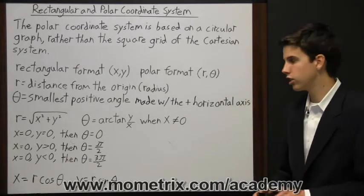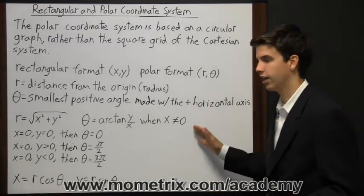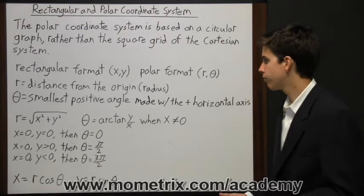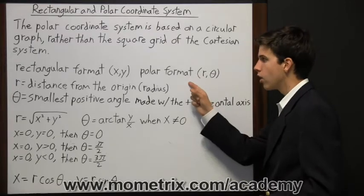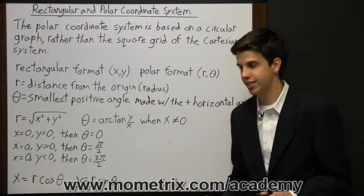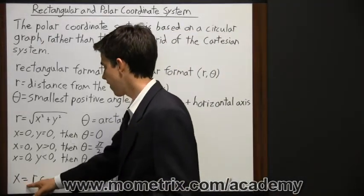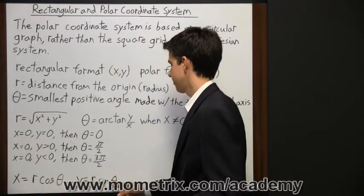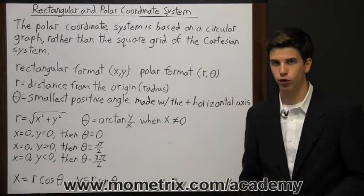Now, if x is positive, use the positive square root value for r. And if x is negative, then use the negative square root value for r. We also have to be able to convert in the other direction. So if we have polar format, we have to convert to rectangular format by separating it into two equations. We find x by r cosine of theta, and we find y by r sine of theta. So that's a look at the rectangular and polar coordinate system.